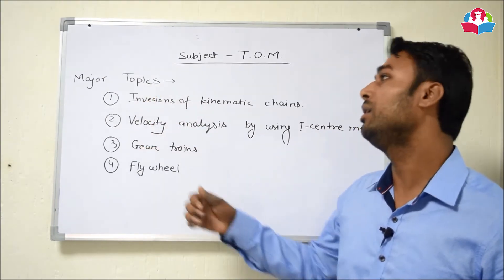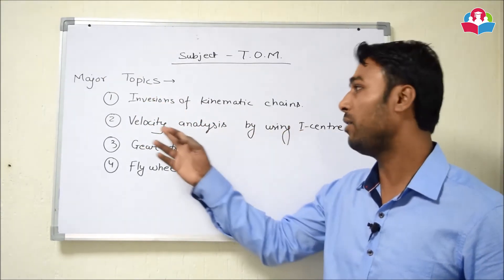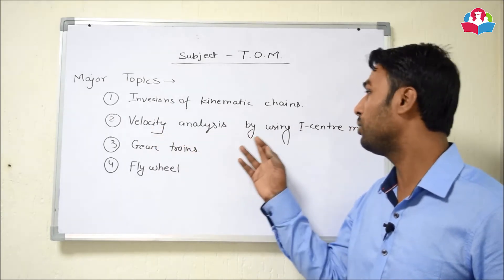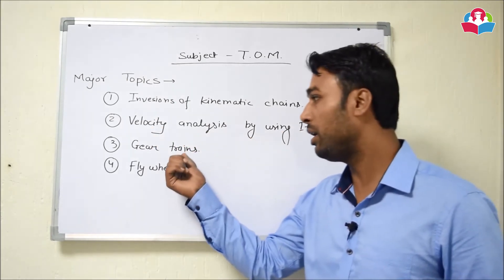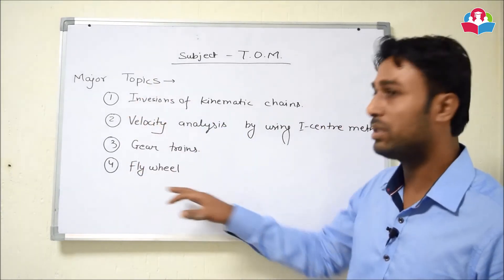So today we are going to discuss some major topics in Theory of Machine. The first topic is inversions of kinematic chains, the second one is velocity analysis by using I-center method, third is gear trains, and fourth is flywheel. So these all four topics are very important for the GATE.